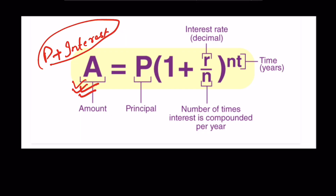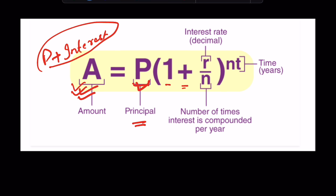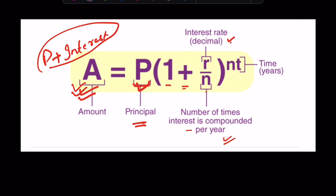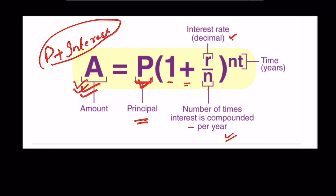The compound interest formula is: A = P(1 + R/N)^(N·T), where P is the principal, R is the interest rate in decimal form, N is the number of times interest is compounded per year — annually means N=1, quarterly means N=4, twice per year means N=2 — and T is the time in years.